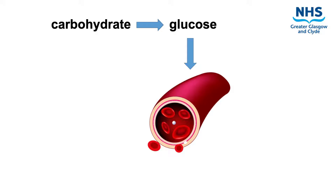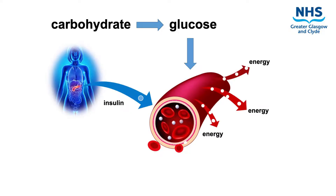This glucose gets absorbed into our bloodstream, which makes blood glucose levels rise. Normally our body's pancreas will then produce a hormone called insulin to control these blood glucose levels and stop them from going too high. Insulin works very much like a key, allowing excess glucose to move out of the bloodstream and into the body's cells where it can be used for energy.